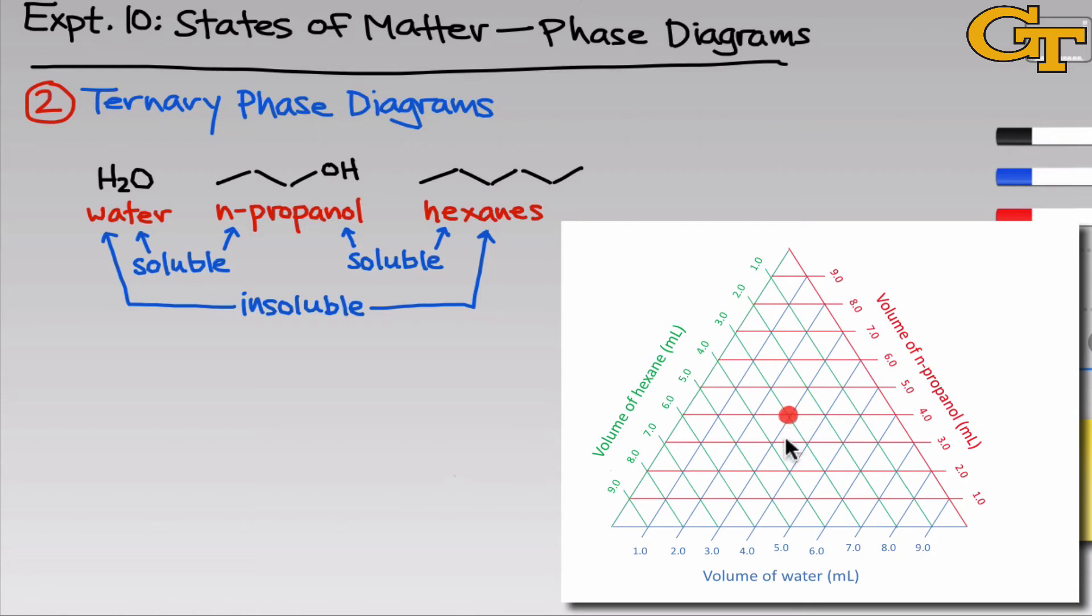So for example, if we wanted to determine the composition of this mixture that I've highlighted here, the point right in the middle, we need to move to the right along the red tie line because that's where it sticks out on the right-hand side of the triangle. We need to move down and to the left along the blue tie line because, again, that's where the blue tie line sticks out along the bottom, and we need to move up and to the left along the green tie line because that's where the green tie line sticks out. And what we can see is that there are four mLs of propanol in this mixture, three mLs of water, and three mLs of hexane. Notice that the three volumes sum to ten mLs. That's going to be true for all the mixtures we use. So you can use this as a check to make sure you're reading the phase diagram correctly.